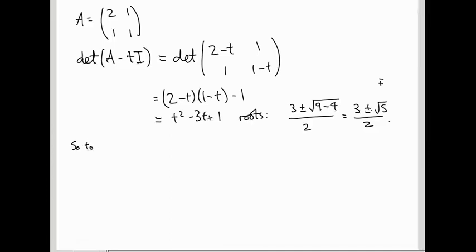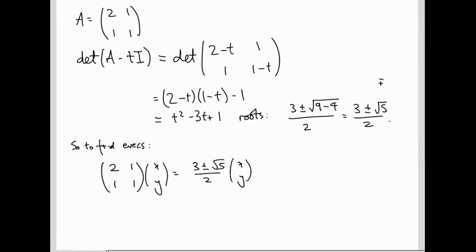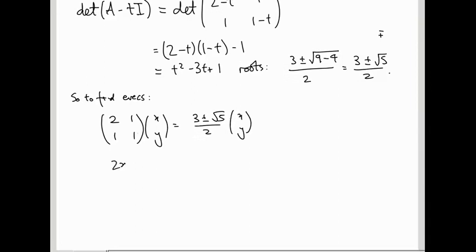So to find the eigenvectors, we need to solve Av equals lambda v. We need to solve 2, 1, 1, 1 times x, y equals 3 plus or minus root 5 over 2, x, y. So let's multiply the matrix out. We get 2x plus y, x plus y, and then on this side we get 3 plus or minus root 5 over 2, x, and 3 plus or minus root 5 over 2, y.